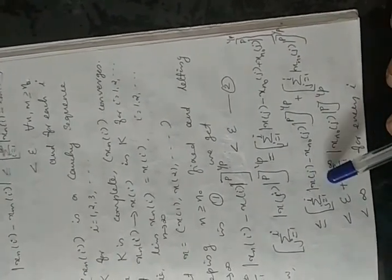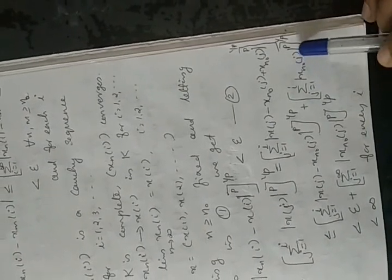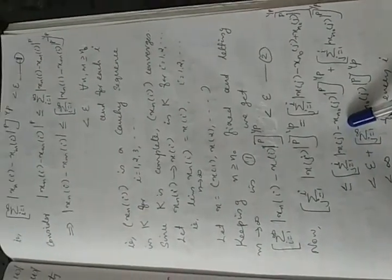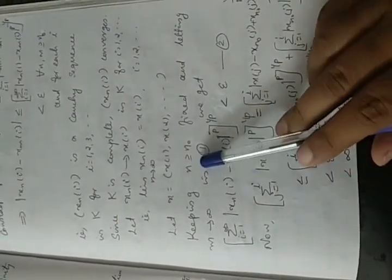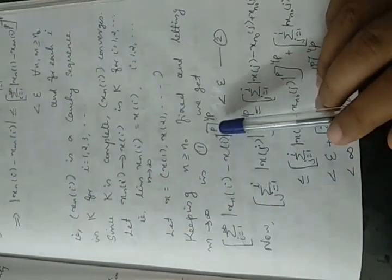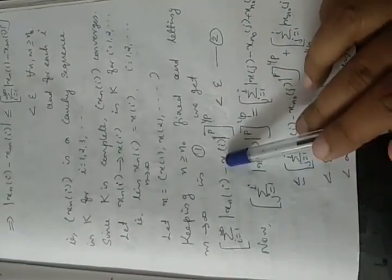By Minkowski's inequality, this is less than or equal to (Σ_{j=1}^{i} |X(j) − Xn₀(j)|^p)^{1/p} plus (Σ_{j=1}^{i} |Xn₀(j)|^p)^{1/p}. The first term is less than or equal to (Σ_{i=1}^∞ |Xn(i) − X(i)|^p)^{1/p}, which is less than ε for N ≥ N₀. Taking N = N₀, the first term is less than ε.